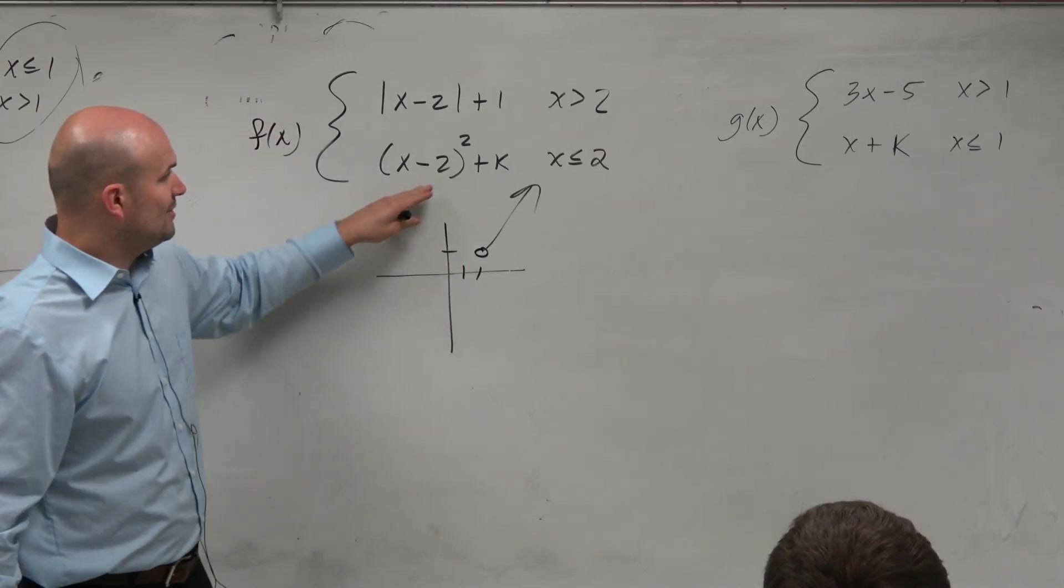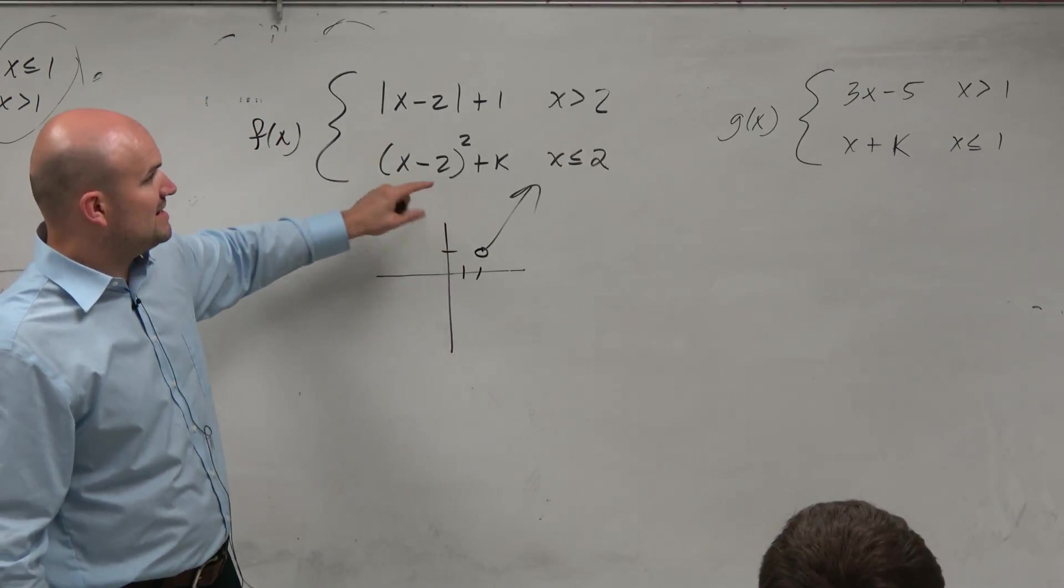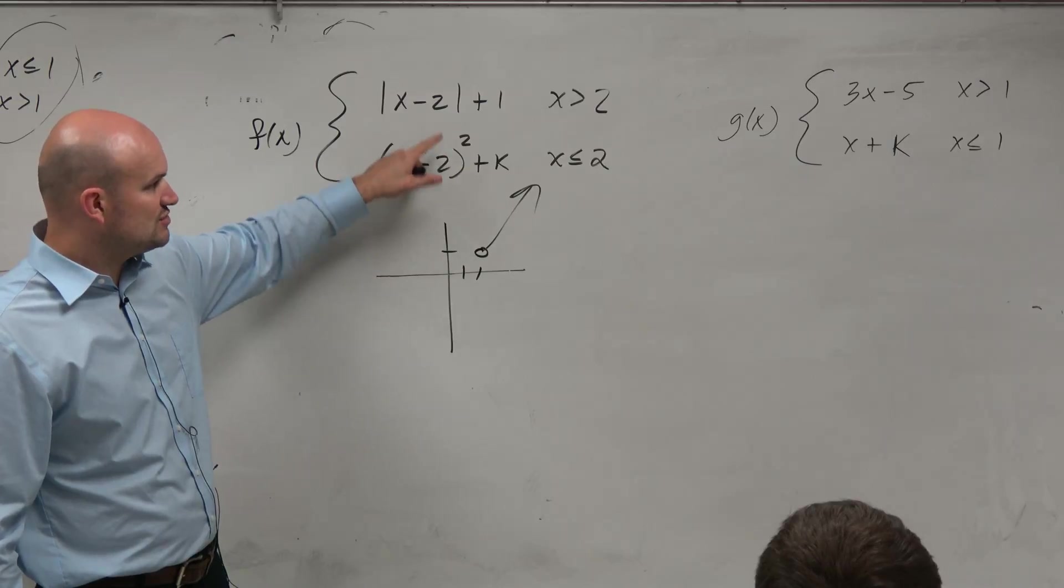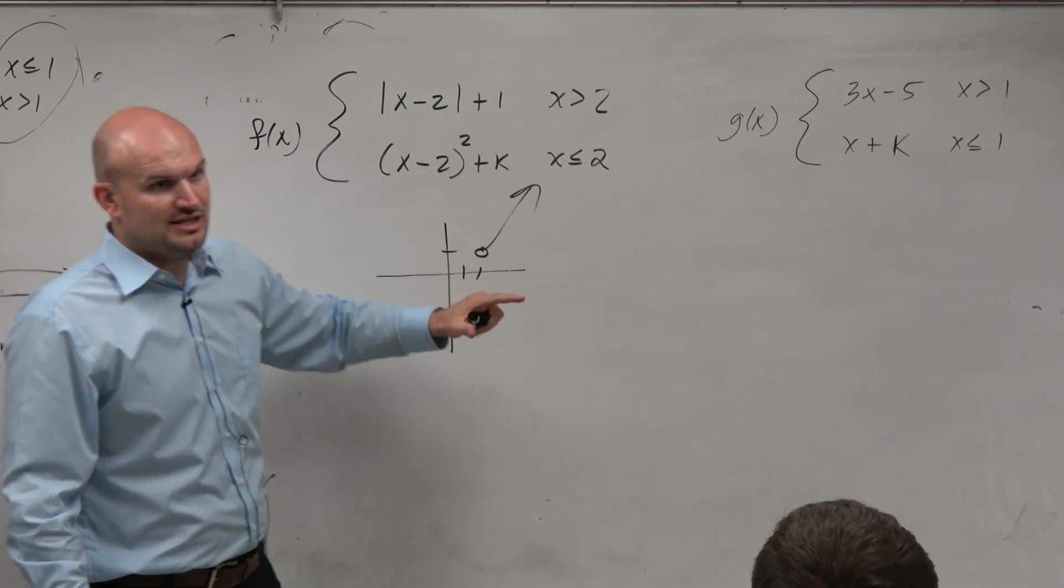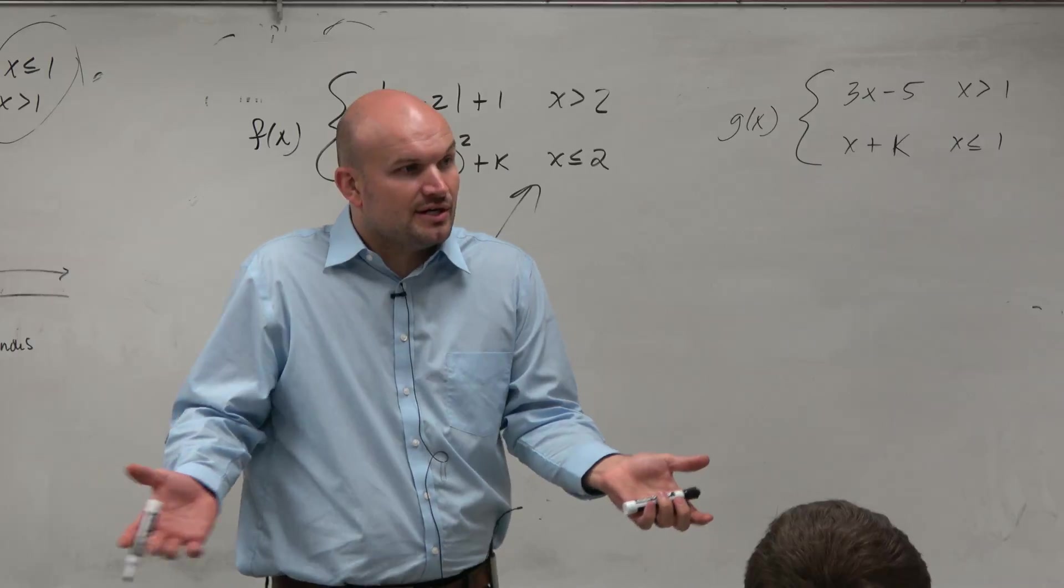OK. Now the other one says, find the value of k that makes this continuous. So we have x minus 2 squared plus k. Well, let's just pretend k is 0, because wouldn't that be easy to graph if k was 0?